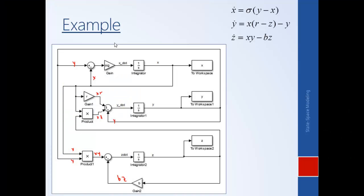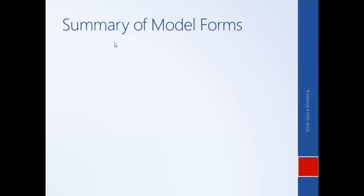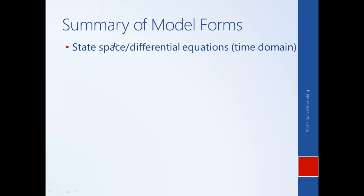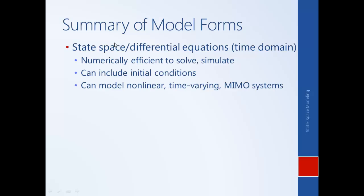That completes this example and this module. In summary, the advantages of a state space model compared to a transfer function model are: they are numerically efficient to solve and simulate; you can include initial conditions; you can model nonlinear and time-varying systems; they are more convenient for MIMO systems with multiple inputs and outputs; and they facilitate a geometric interpretation, as seen with the Lorenz equations.